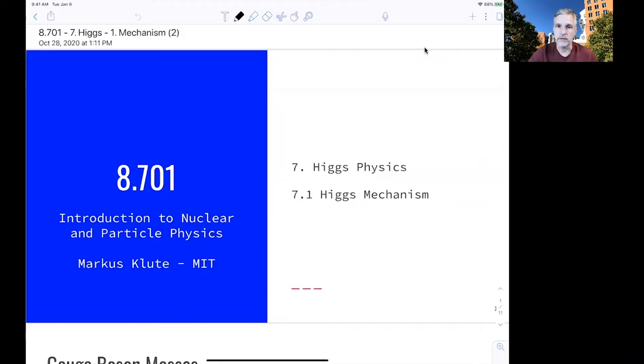Welcome back to 8.701. So in this lecture, we talk about the Higgs mechanism. As you might know, the Higgs boson was discovered in 2012 by the LHC experiments. But the theoretical discovery of the Higgs boson happened much, much earlier than that.